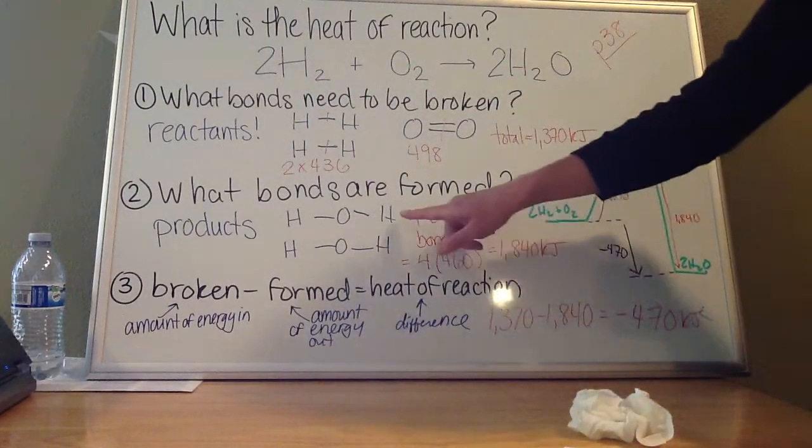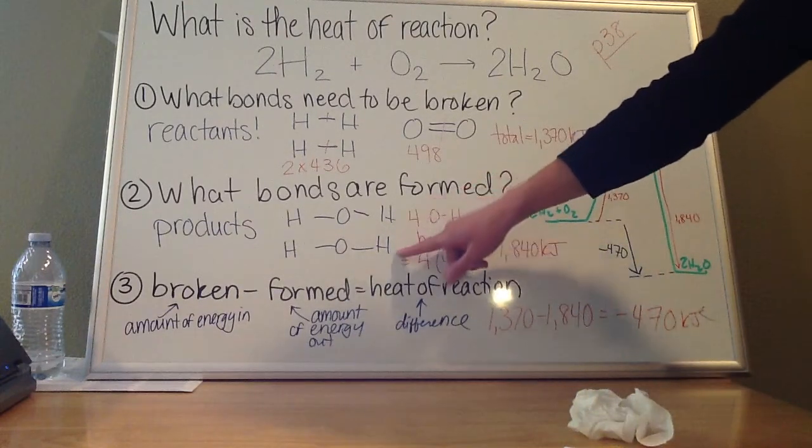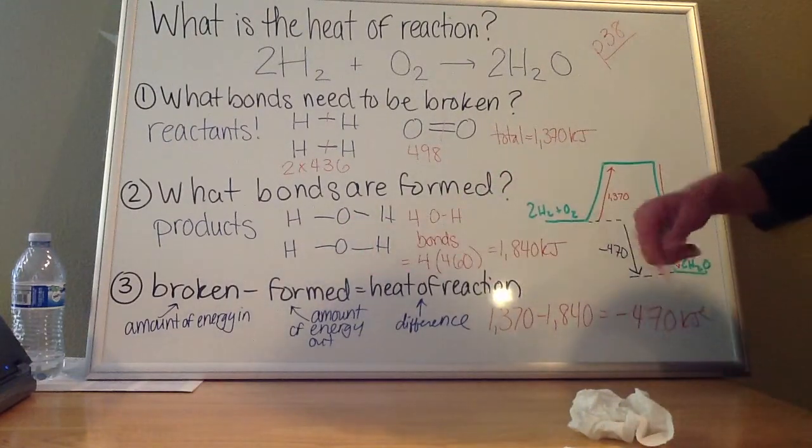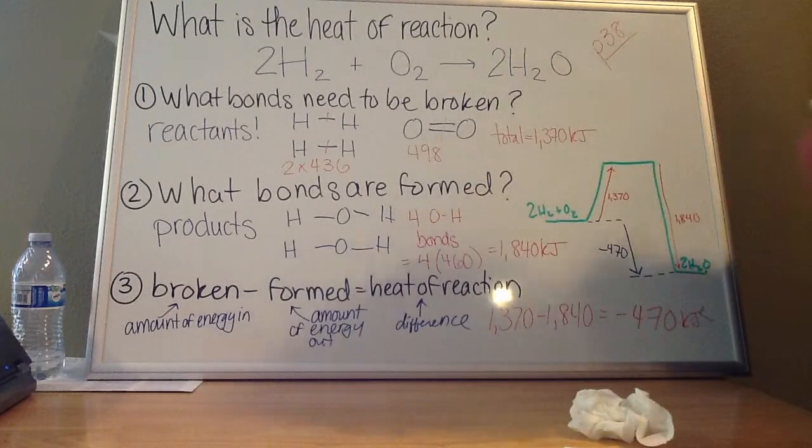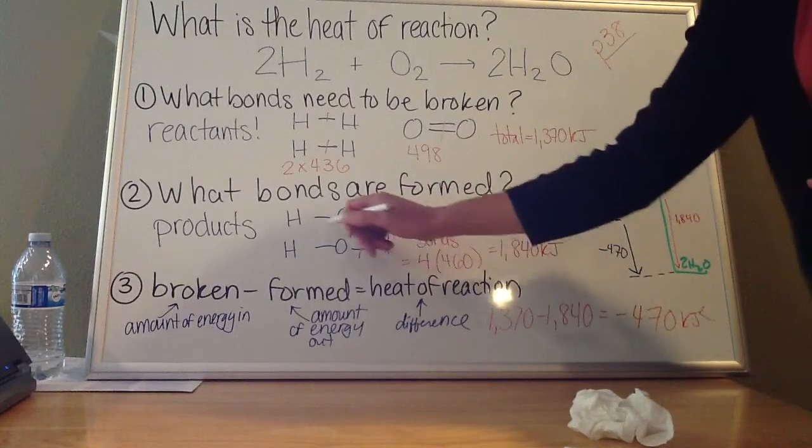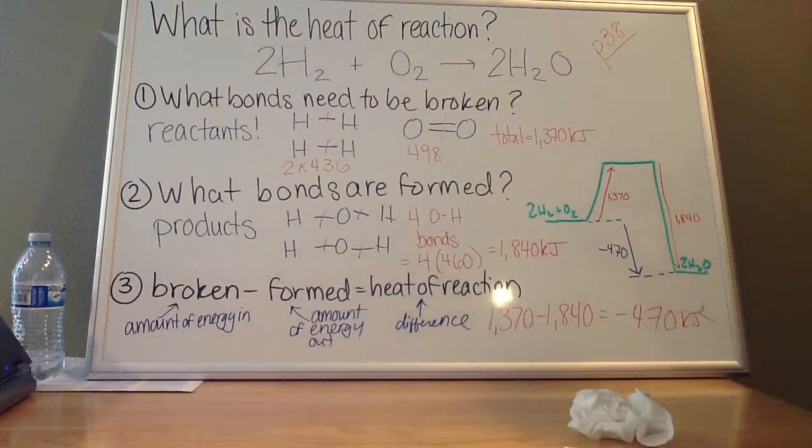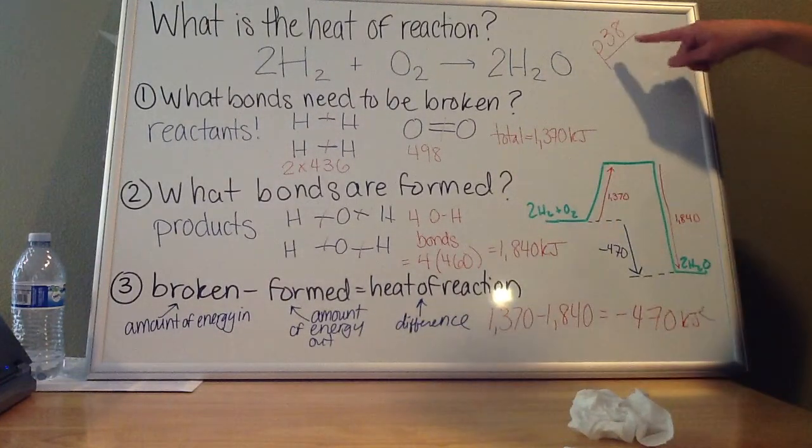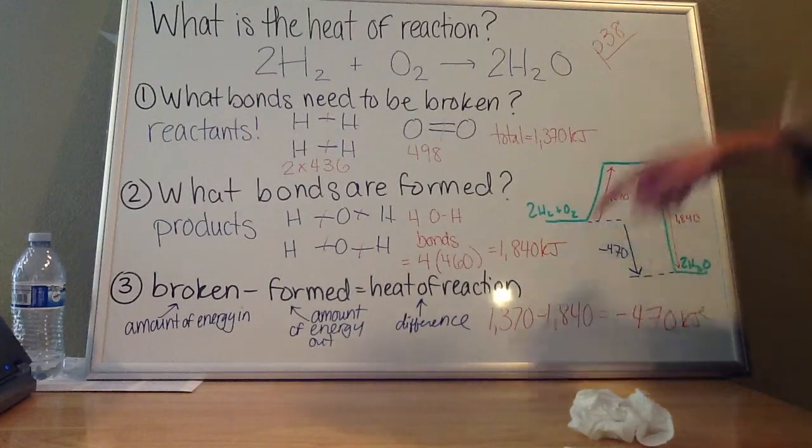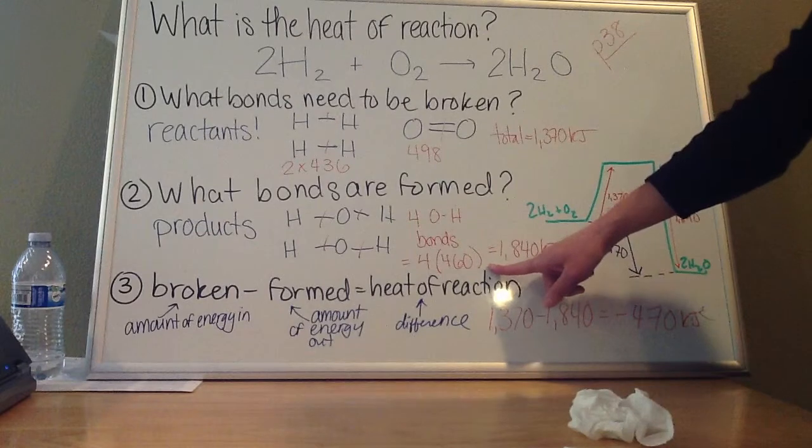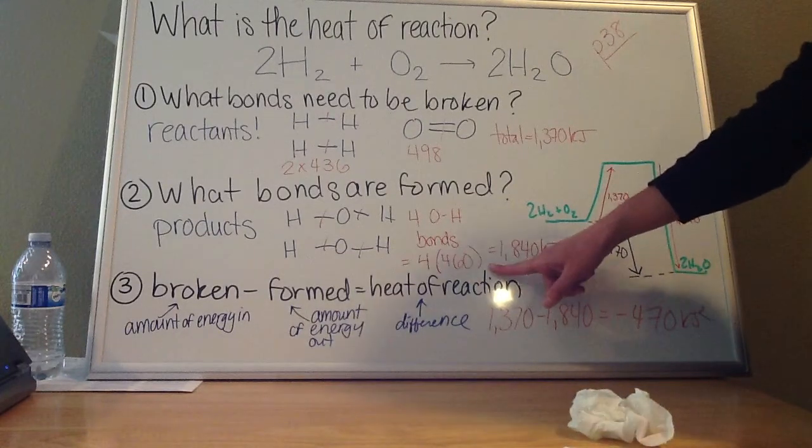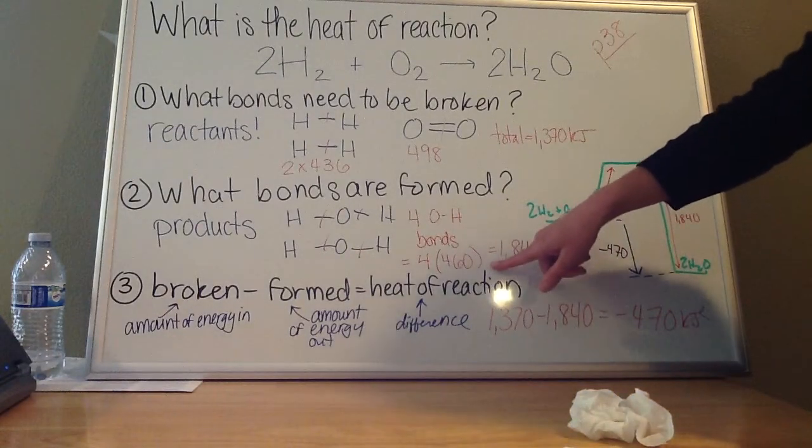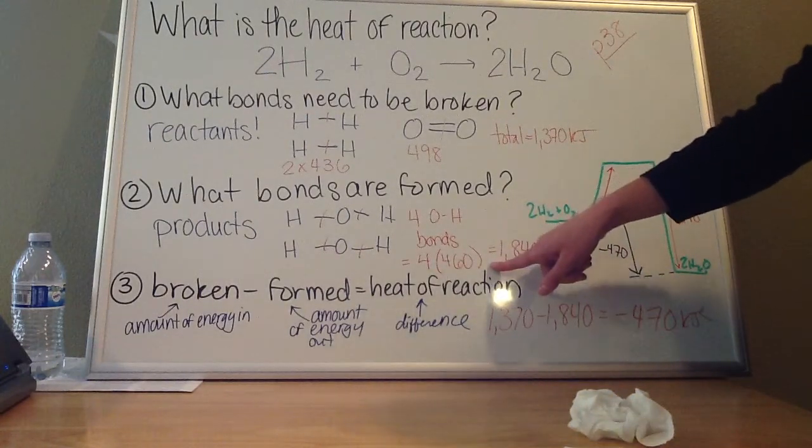So I'm going to draw out the structural formulas of my product. So I've got two water molecules. And water looks like this. I've got two H's attached to an O. So if I look at this, you can see I've got four lines here representing four bonds that need to be formed. So I've got four O-H bonds. And these are actually being formed, not broken. So if you look at your table of values on page 38, it will tell you it takes 460 kilojoules of energy to break an O-H bond. So if I'm actually making these O-H bonds, that means that each O-H bond I form will release 460 kilojoules of energy.